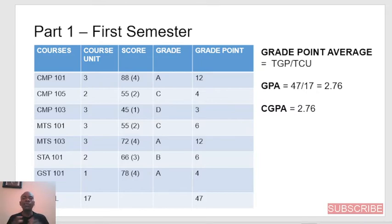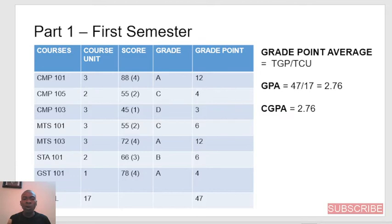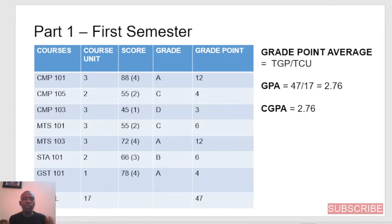The student has to do these courses: CMP101, CMP105, CMP103, MTS101, MTS103, STA101, and GST101. The course units attached to them are: CMP101 is a 3-unit course, CMP105 is 2 units, CMP103 is 3 units, MTS101 is 3 units, MTS103 is 3 units, STA101 is 2 units, and GST101 is 1 unit.